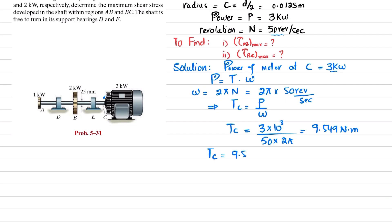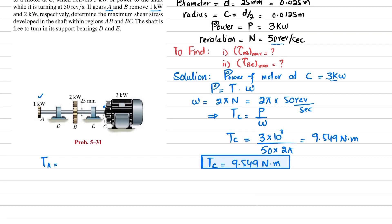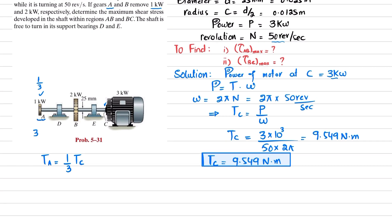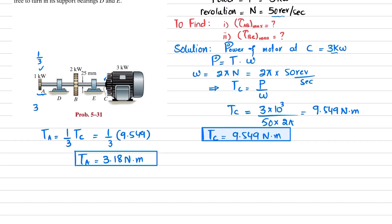So T_C is 9.549 N·m. Now we calculate the torque at point A. Since gear A removes 1 kilowatt out of the total 3 kilowatts, torque at A equals (1/3) × T_C. Substituting: T_A = (1/3) × 9.549, which gives torque at point A equal to 3.183 newton-meters.